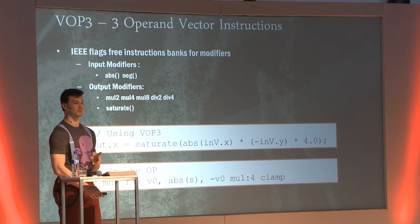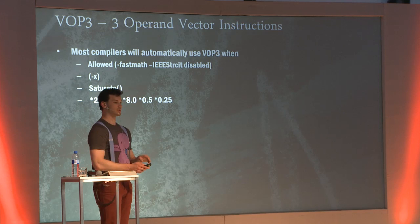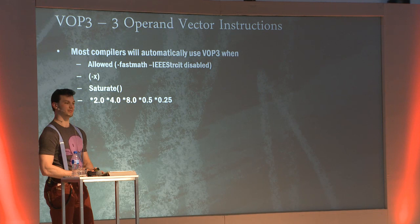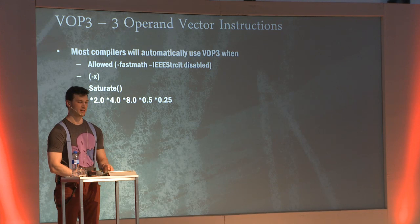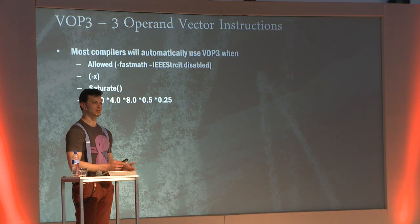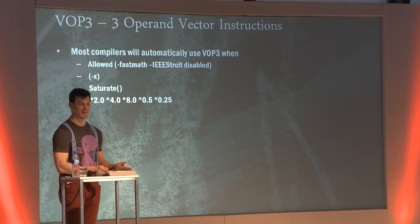Most compilers will emit these output modifiers automatically if you enable fast math and disable IEEE compliance. The Windows graphics driver runs with non-strict IEEE by default, so it's on the fast path. If you're running the compute pipeline on PC, it uses the slower path, so keep that in mind when comparing results between graphics and compute ops.